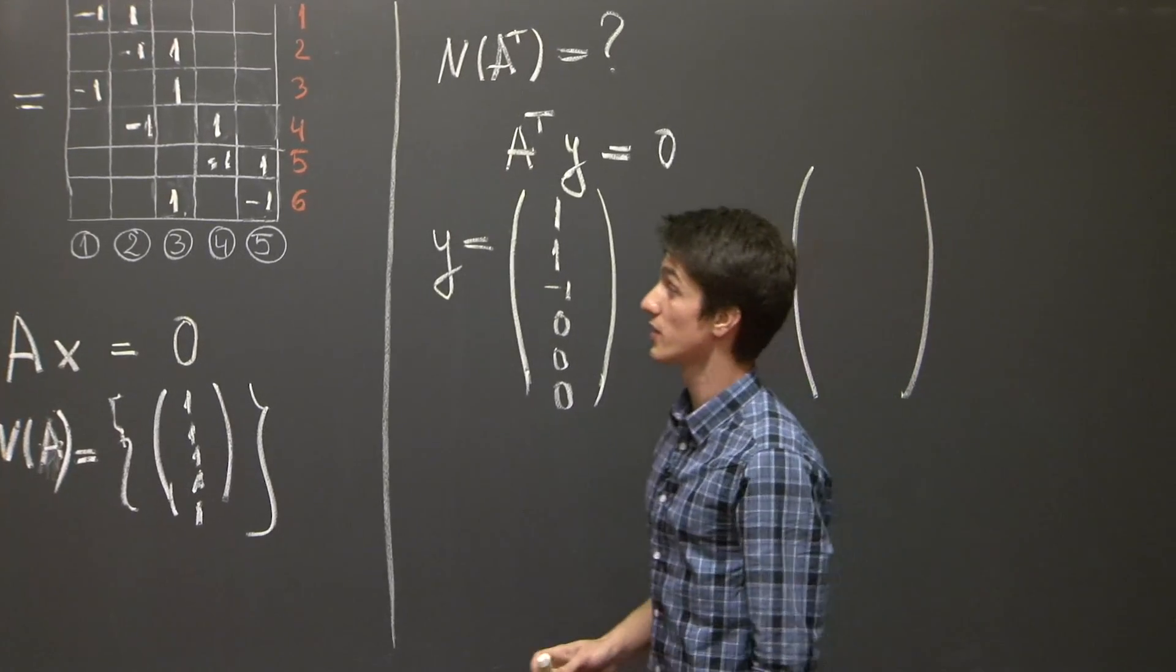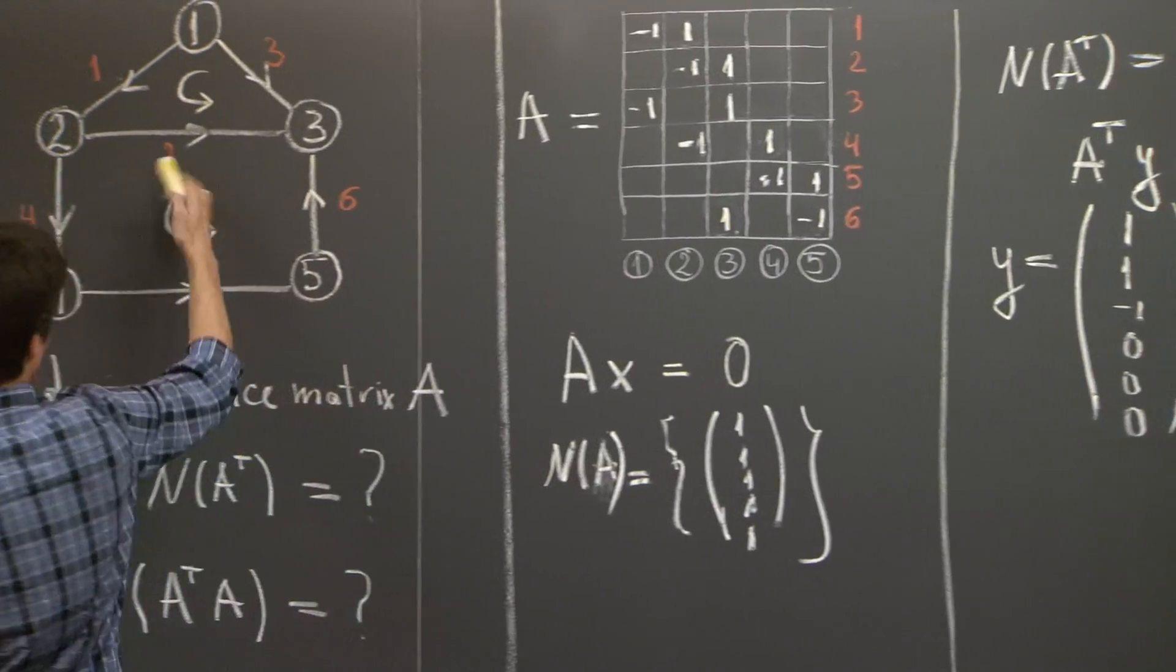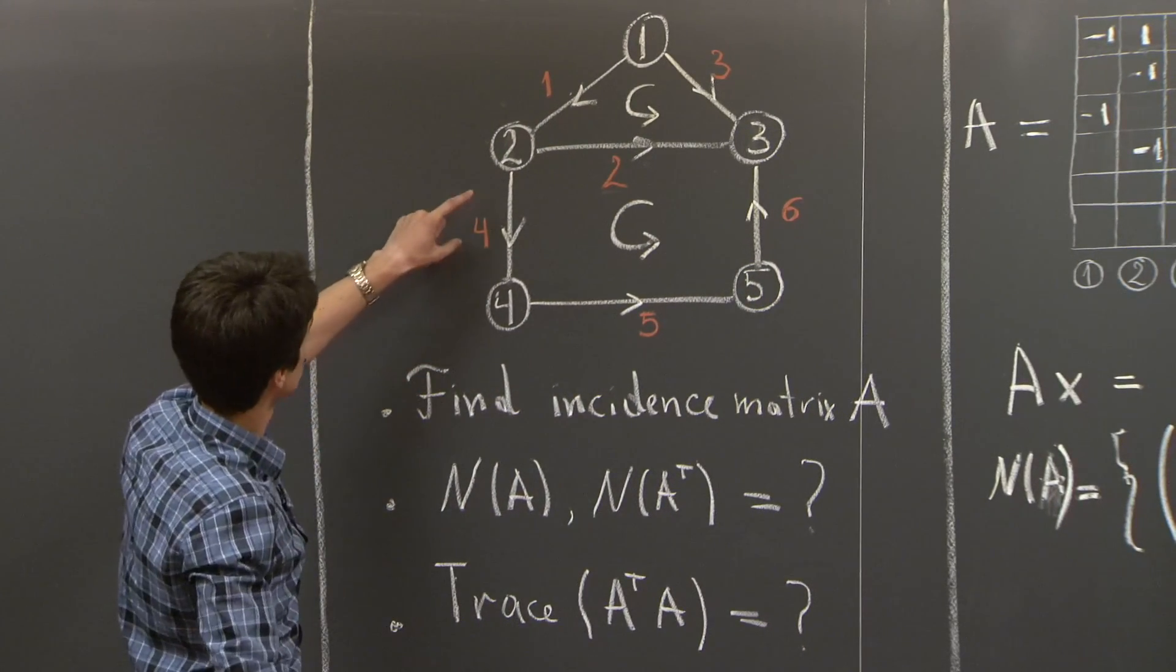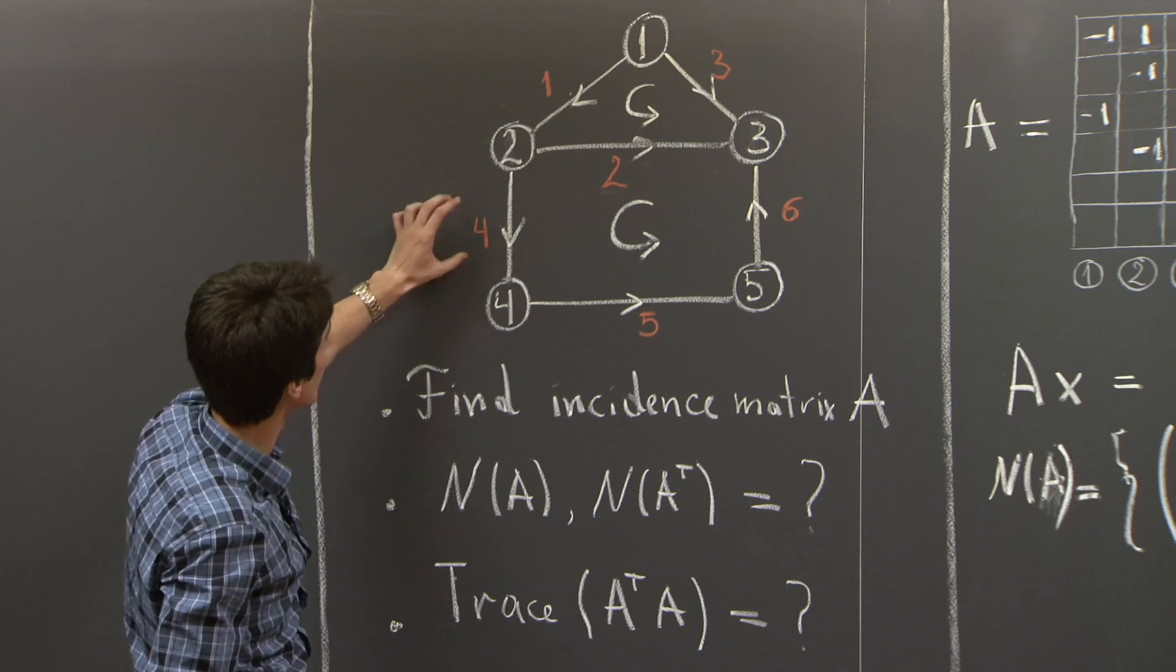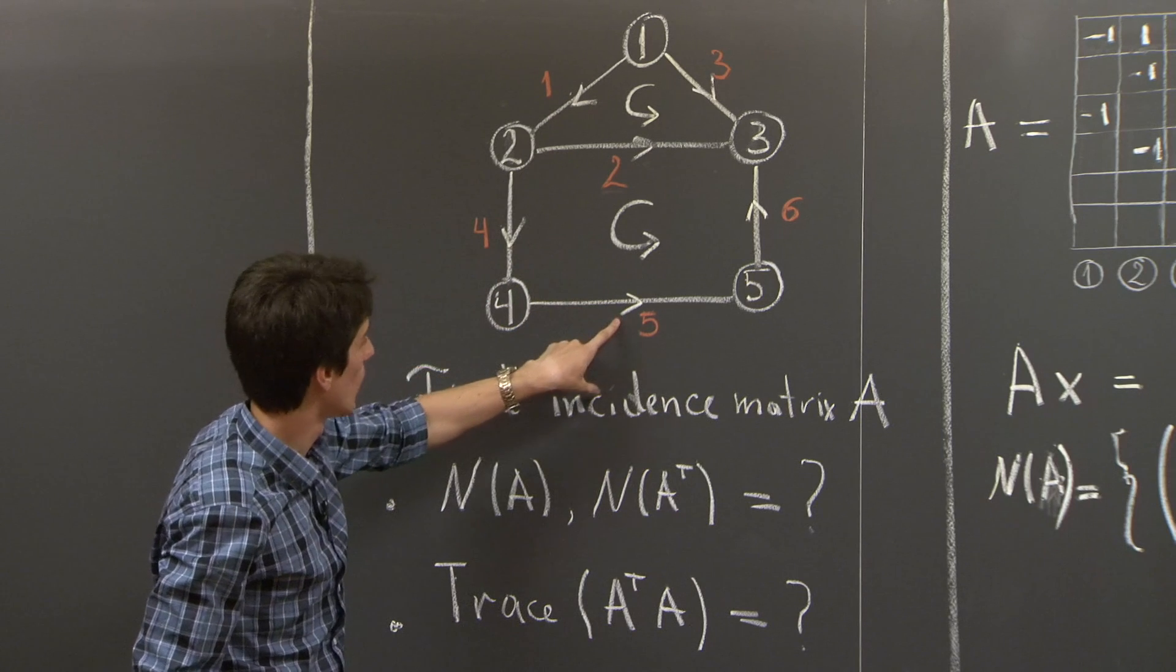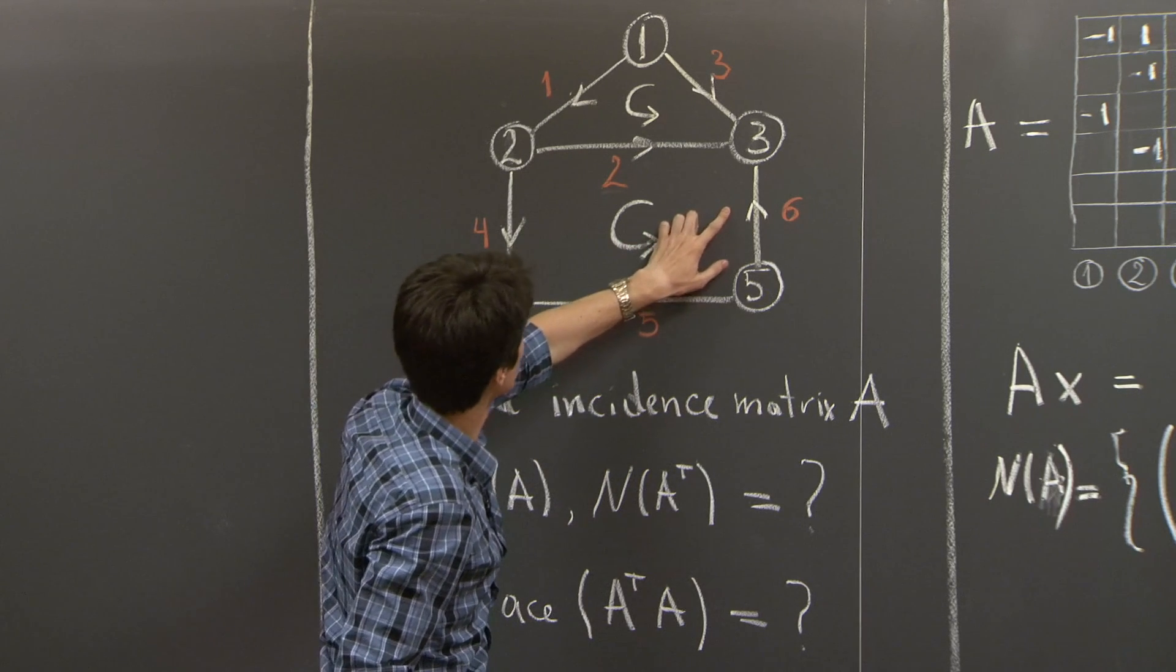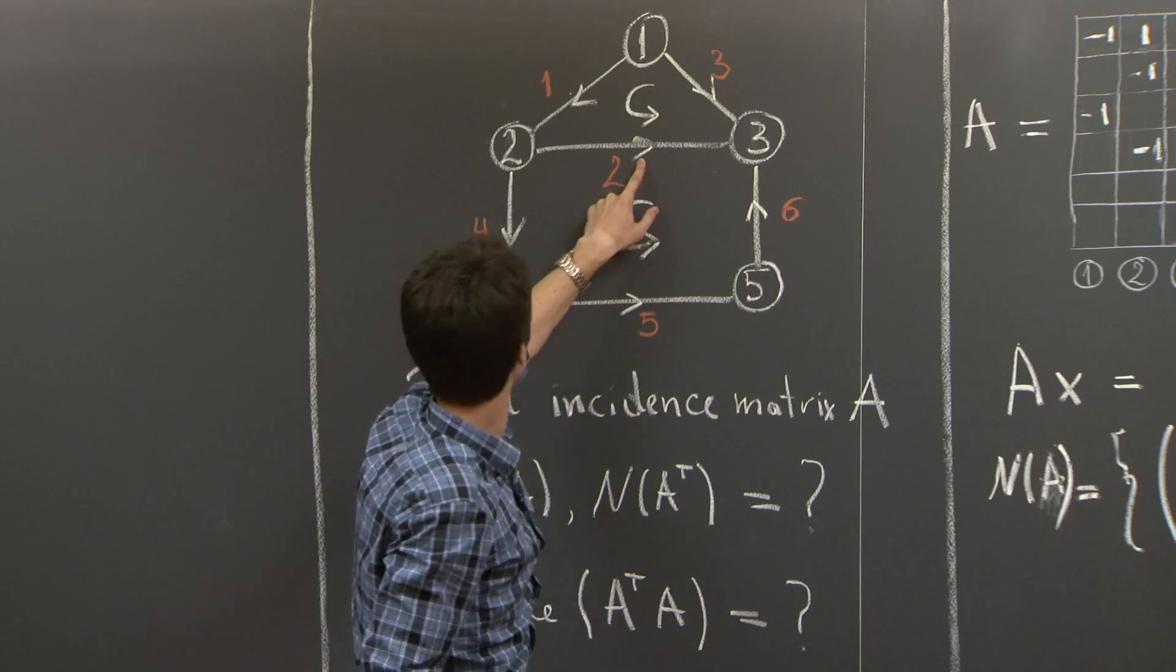Let's see what solution we get by flowing around the loop in this square. Well, we get a current of 1 along edge 4, current of 1 along edge 5, current of 1 along edge 6, and current of negative 1 along edge 2. So, let's be careful.